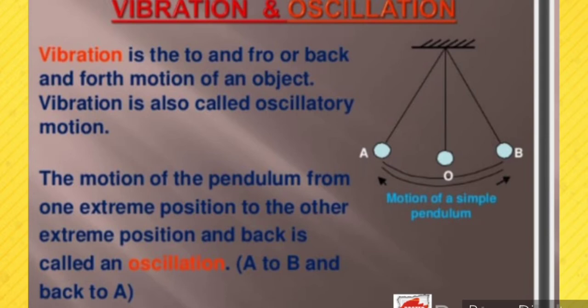Now we study some important terms related to sound. Vibration is the to-and-fro or back-and-forth motion of an object, also called oscillatory motion. The motion of a pendulum from one extreme position to the other extreme position and back is called one oscillation — in the figure, we can see this as from point A to point B and back to A.